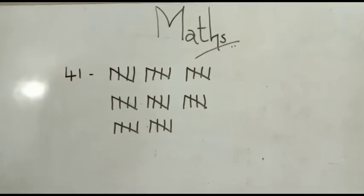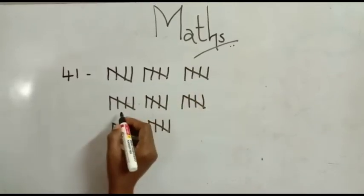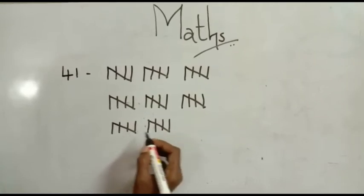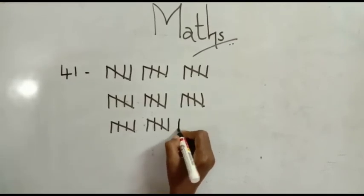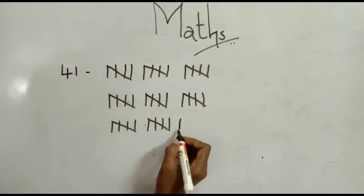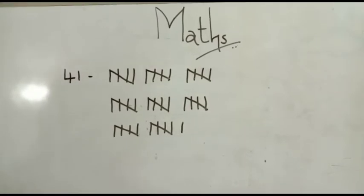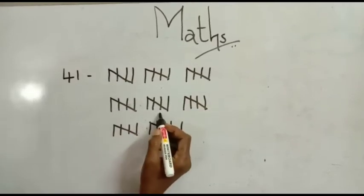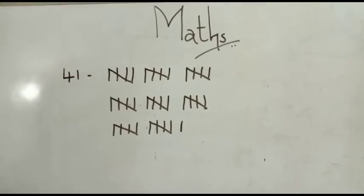Tally mark of number 41. 5, 10, 15, 20, 25, 30, 35, 40. 40 and one more makes 41. 42 minus one is 41. Okay.